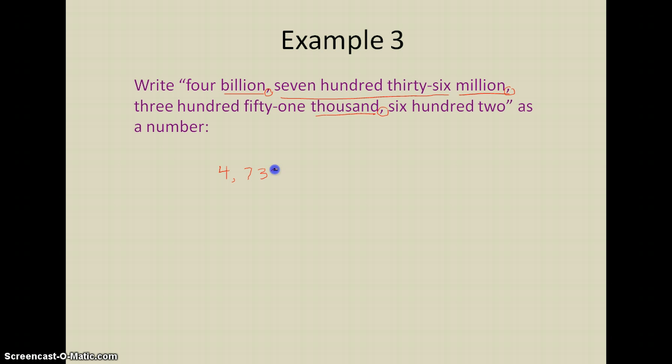In the thousands period, I've got the number 351. So I'm going to go over here and I'm going to write 351. Follow that with a comma. Just like there's in the words up here. And then the end of my number is going to be 602. And so I write 602 as 602. There's no tens there.